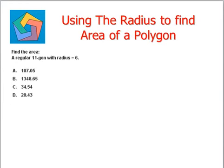Let's move on to the next question. Find the area of a regular 11-gon with radius equals 6. Now, n equals 11 given to us and r equals 6.